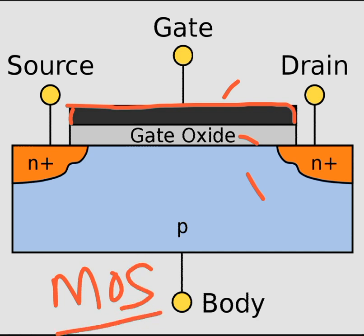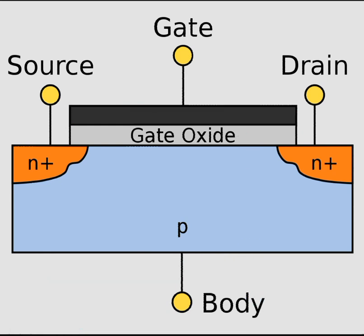In this specific case, we call it a MOSFET — metal oxide semiconductor field effect transistor. There are two types of FET: one is the MOSFET, and the other is the junction field effect transistor, also called JFET.